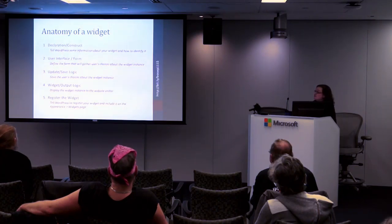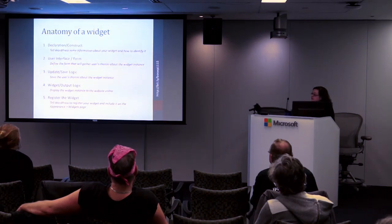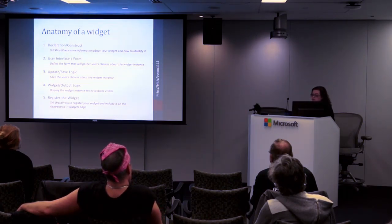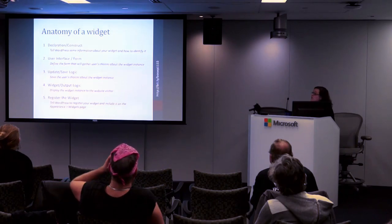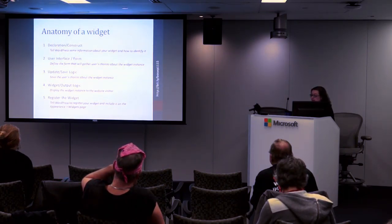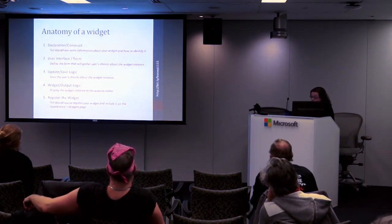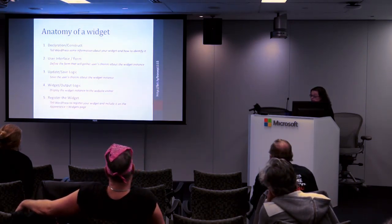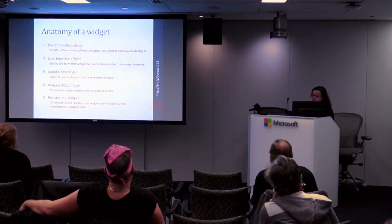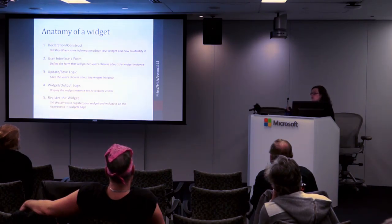The anatomy of a widget breaks down into five pieces. The first is our declaration — called our construct — where we basically tell WordPress what this widget is, what its name is, and give it information about how to identify the widget. The second piece is the user interface or the form — the form that appears when you drag the widget into a widget area and open it up.